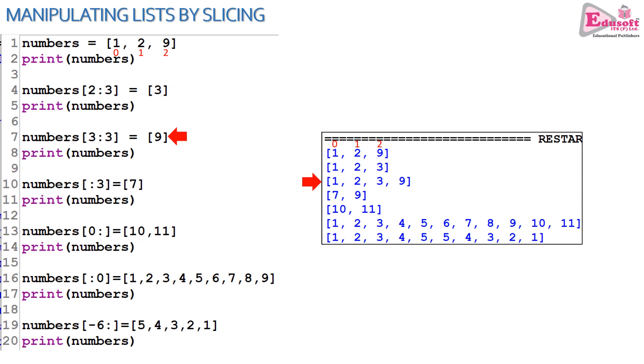Similarly, 3 colon 3 is actually the next position possible in the list, so 9 is appended. Line number 10 is index 0, position 3. At index 0, position 3, we are removing a range of values by a single value 7. See line number 13. From index 0 till the end, the entire list is being replaced by the values 10, 11.